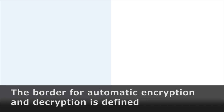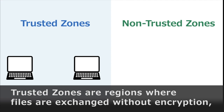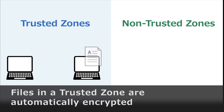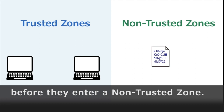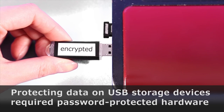This prevents data loss without reducing productivity. The border for automatic encryption and decryption is defined by trusted zones and non-trusted zones. Trusted zones are regions where files are exchanged without encryption, and all other regions are non-trusted zones. Files in a trusted zone are automatically encrypted before they enter a non-trusted zone. Once the zones are set, users will be sticking to the most secure practices without any effort.